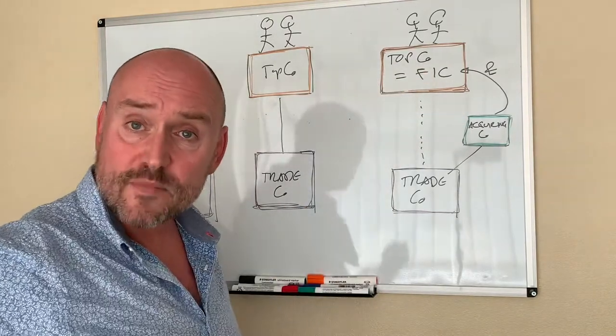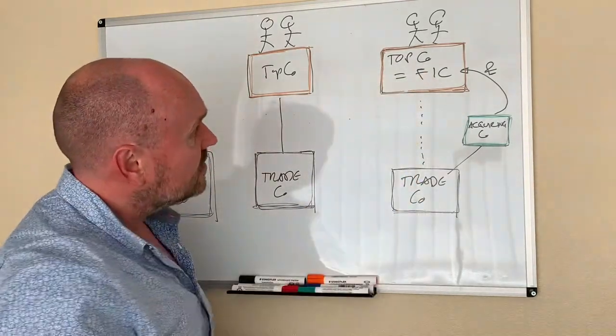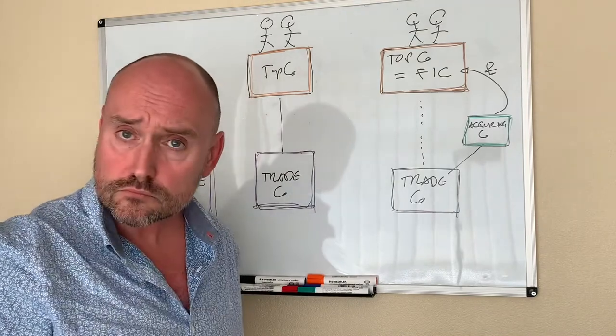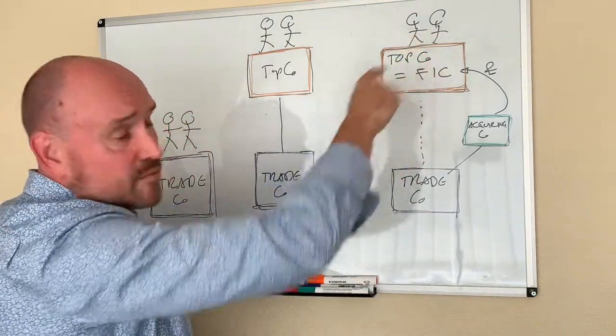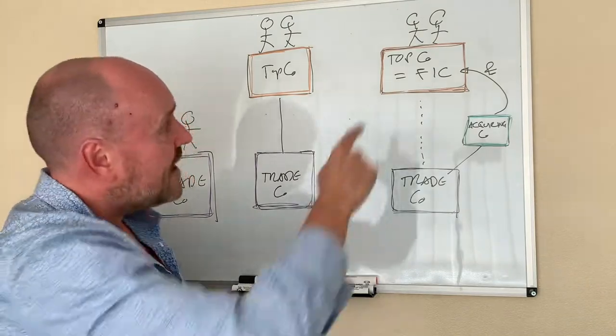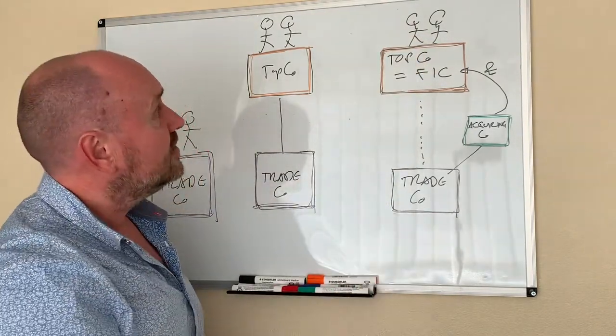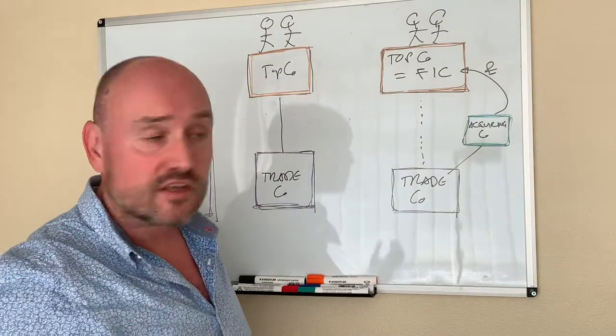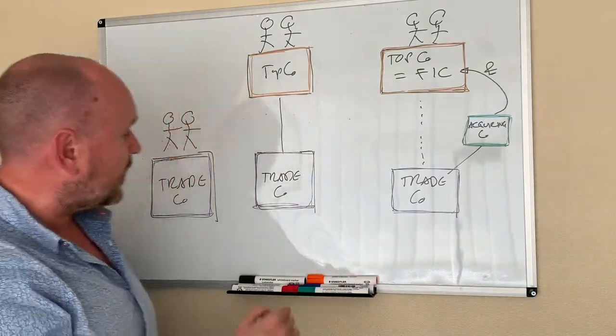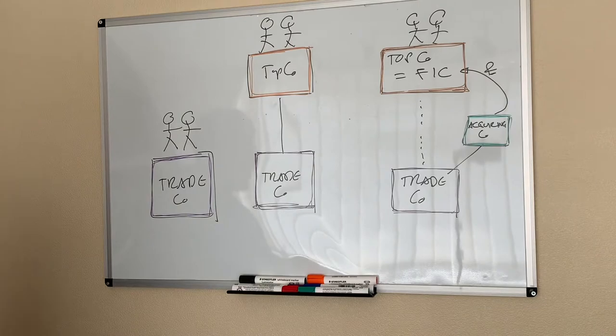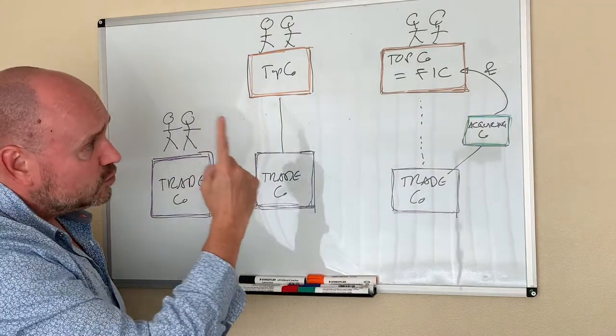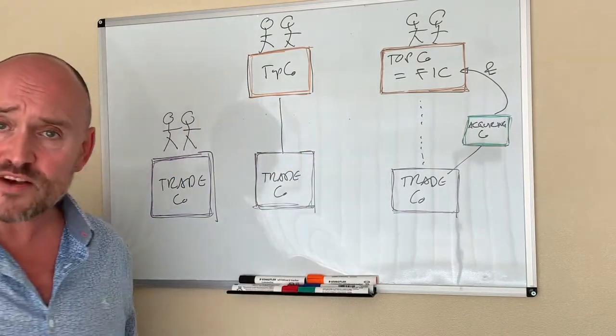also known as a family investment company, and then that company can invest in all sorts of assets. And dividends can be paid out in a tax-efficient manner to husband and wife for personal expenses that they will have. So that's just a quick overview there on how you go from TradeCo to HoldCo to family investment company.